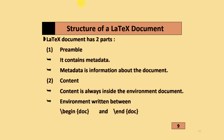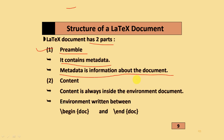Regarding the structure of LaTeX documents: a LaTeX document has two parts. The first is the preamble, which contains metadata — information about the document. The second is the content, which is always inside the document environment, between \begin{document} and \end{document}.